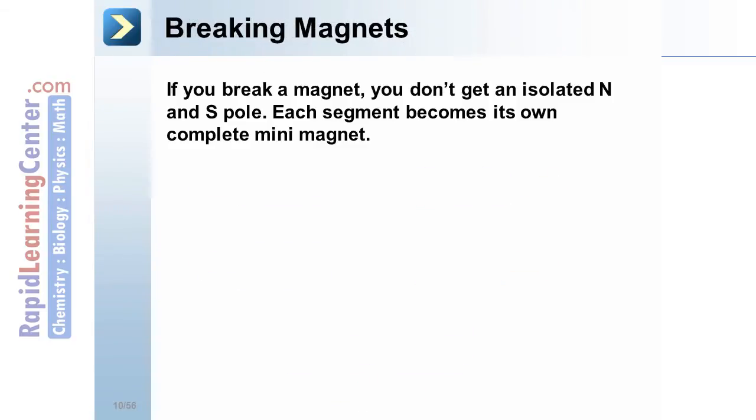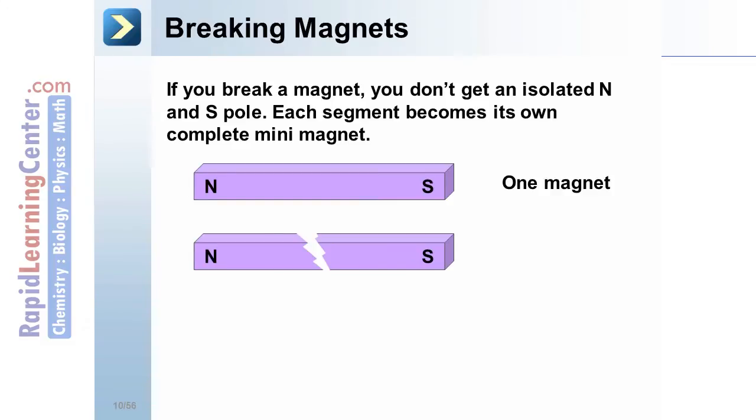Breaking Magnets. If you break, or split apart, a magnet, you don't get an isolated north and south pole as you might imagine. Each segment becomes its own complete mini-magnet. If you begin with one magnet and break it, you actually end up with two complete magnets afterwards.